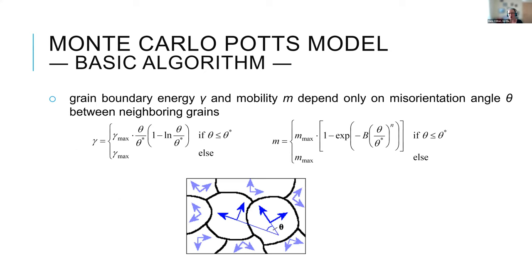Why is the Potts model so simple? In its basics, you have only two materials parameters: grain boundary energy and grain boundary mobility. We can assume, for example, that both depend on the local misorientation regarding certain grain boundaries. We could calculate for each grain boundary from crystallographic misorientations the mobility and energy, or we could obtain this information from an experiment and put it into the simulation. These are the only two parameters needed to start.